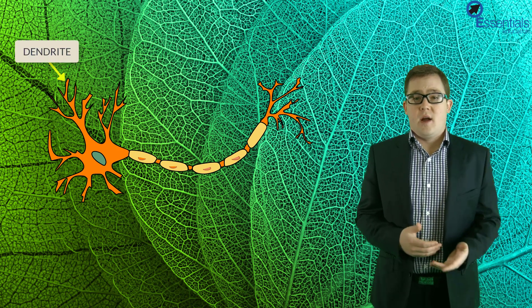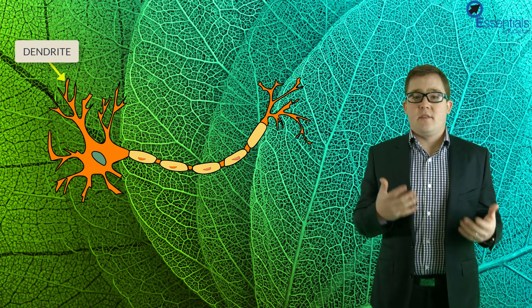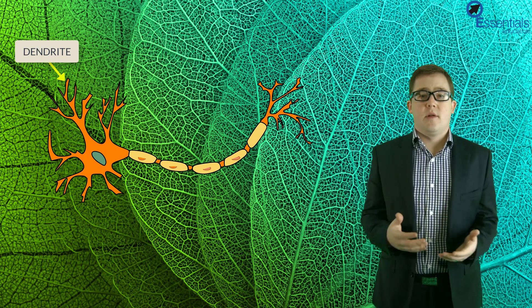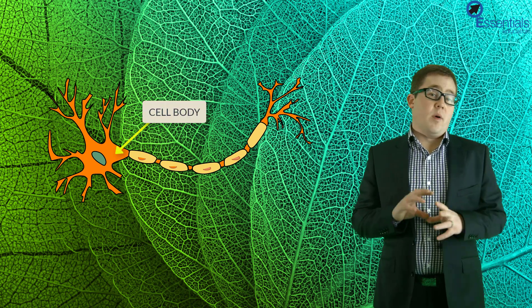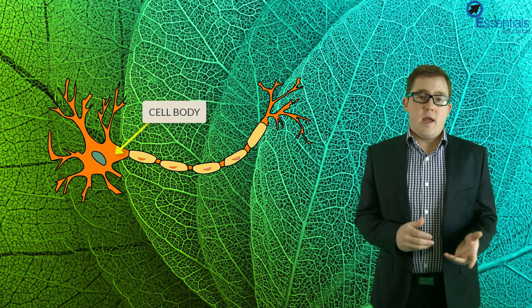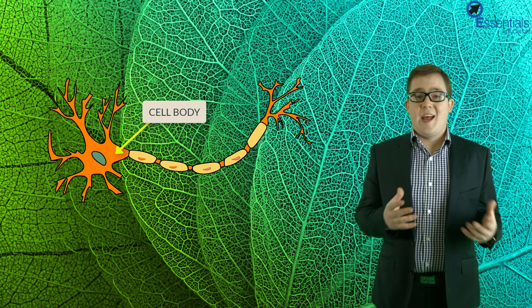They do however have a few key components that you should know. First they have things called dendrites, and these structures are the things that actually receive impulses from other neurons and then transmit the information into the cell. Second we have the cell body itself, and this is where you would find the cell's nucleus, mitochondria and other organelles.